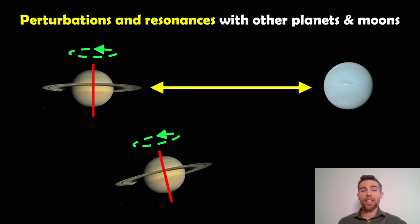Another reason is that you can get perturbations and resonances with other planets and moons. The gravitational interaction with other objects can actually knock them over. I've done a separate video on this. Neptune and Saturn ended up in like a spin-orbit resonance and it ended up knocking Saturn's rotation axis off.